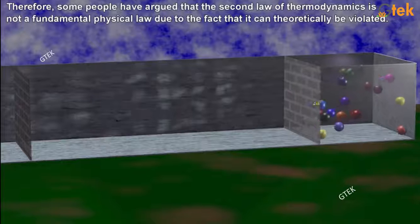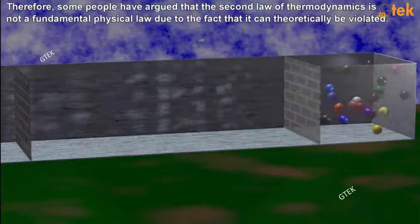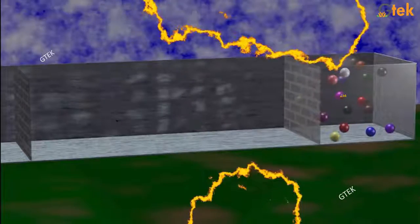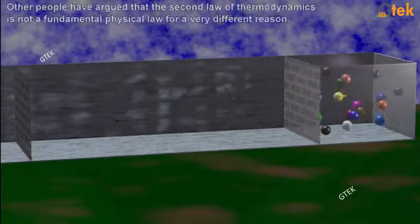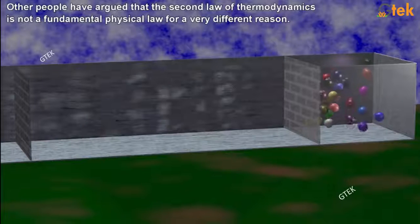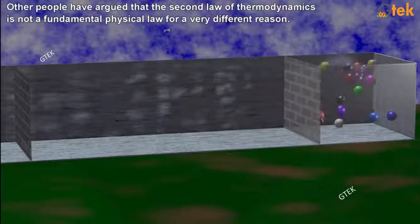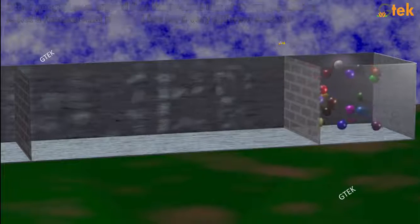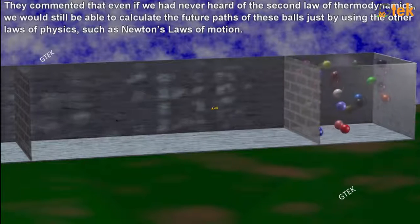Many people have commented that although the probability of all the balls gathering back together in just one area of the box is very low, the probability is not zero. Therefore, some people have argued that the second law of thermodynamics is not a fundamental physical law due to the fact that it can theoretically be violated.